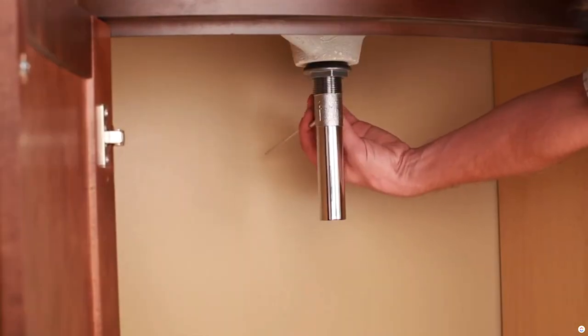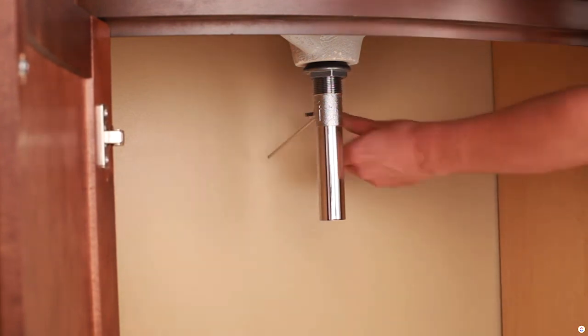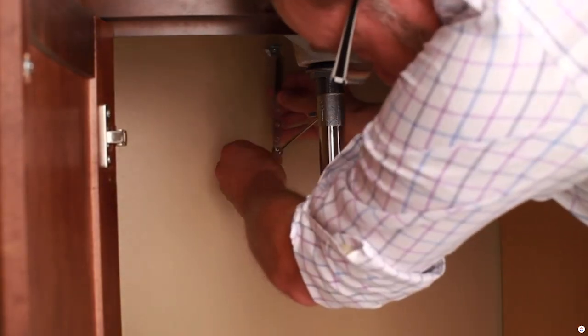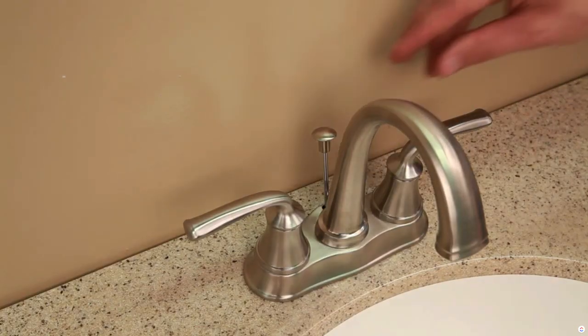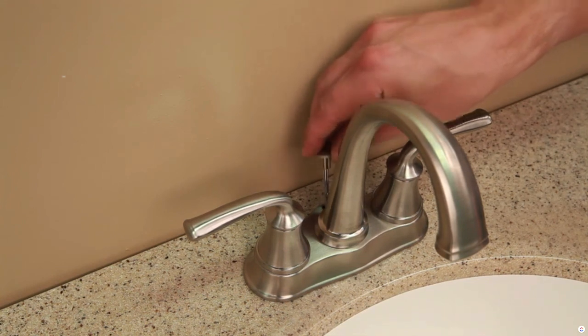Install the rod assembly and wing nut. Hand tighten. Test to confirm the stopper moves with the rod. Insert the lift knob behind the faucet spout. Connect the clevis and clip. Confirm that the lift rod operates the stopper.